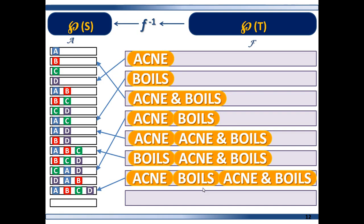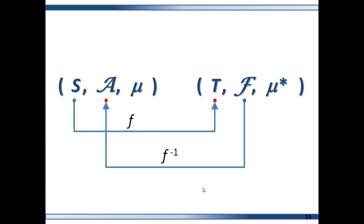Here is an example of sigma algebras that are power sets — and here, every element of F does map to an element in A, so this is a measurable function. So far we have applied the measurable function to measurable spaces, but how does it apply to a measure space? Here, mu is the measure for one measure space and mu-star is the measure for another. Mu-star assigns to each set in sigma algebra F the exact same number that mu assigns to the corresponding set in sigma algebra A. It will find the corresponding set because it is mapped to by the inverse function.